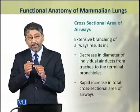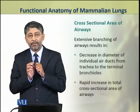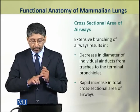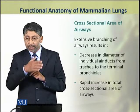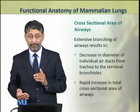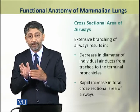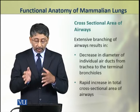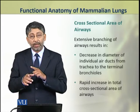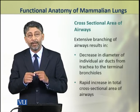The extensive branching in the airways found in the lungs results in a decrease in the diameter of individual air ducts from the trachea to the terminal bronchioles. As division increases, the diameter of individual airways keeps reducing — so the largest diameter is that of the trachea and the smallest belongs to the terminal bronchioles. But at the same time, as the diameter of the tubules decreases, the total cross-sectional area of the airways is increasing rapidly.